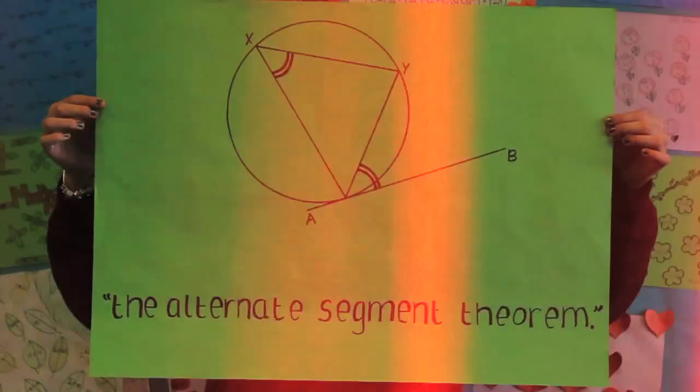The angle between a tangent and a chord is always equal to any angle in the alternate segment.